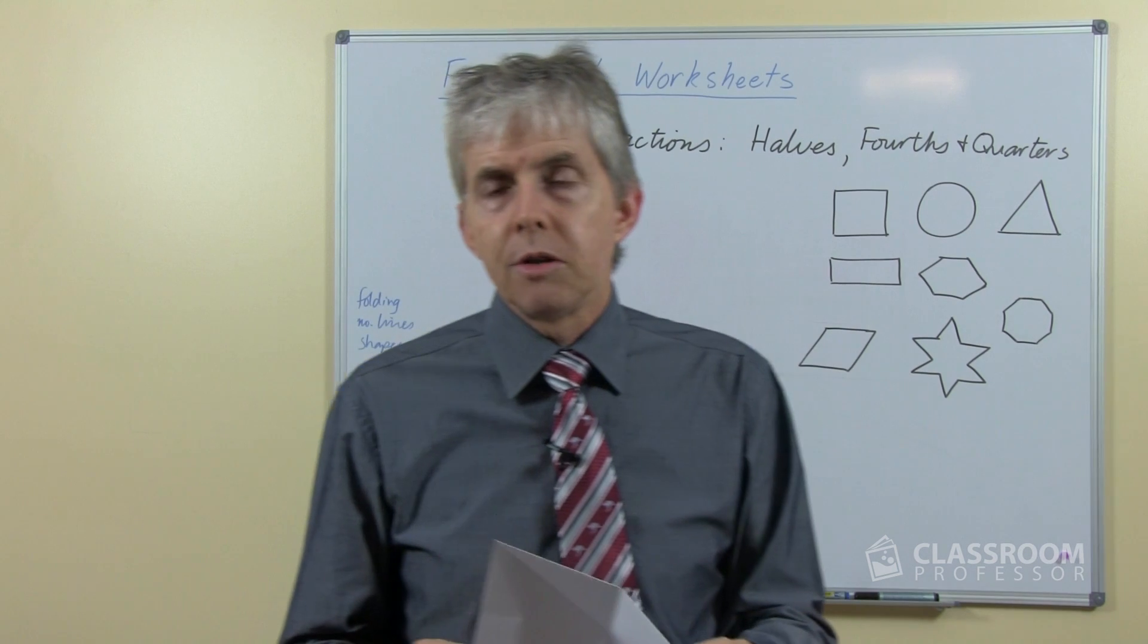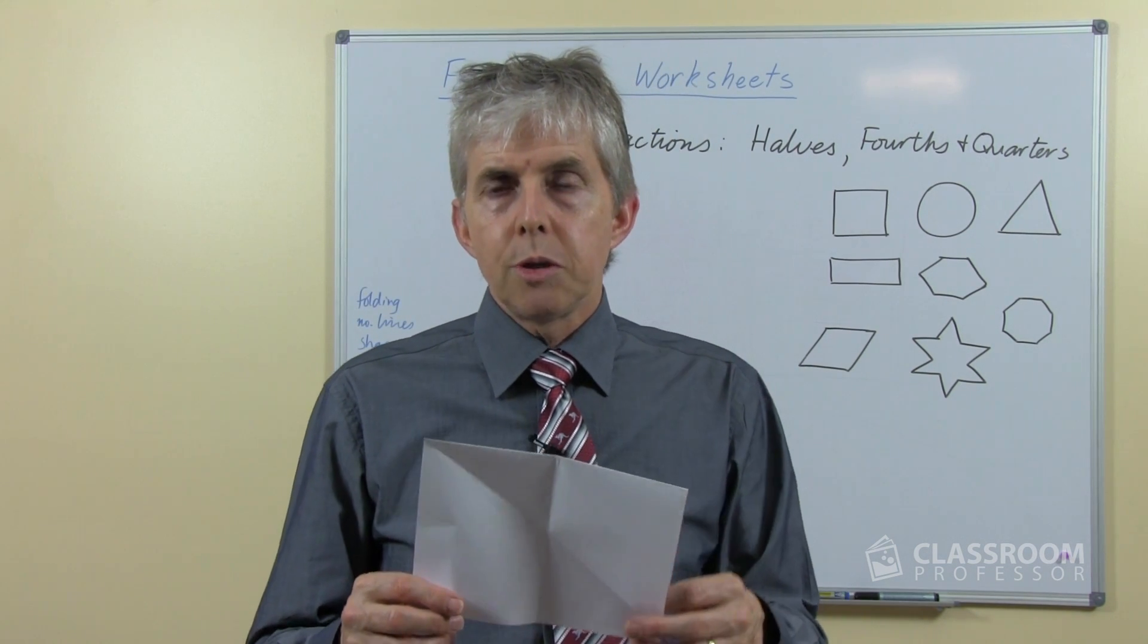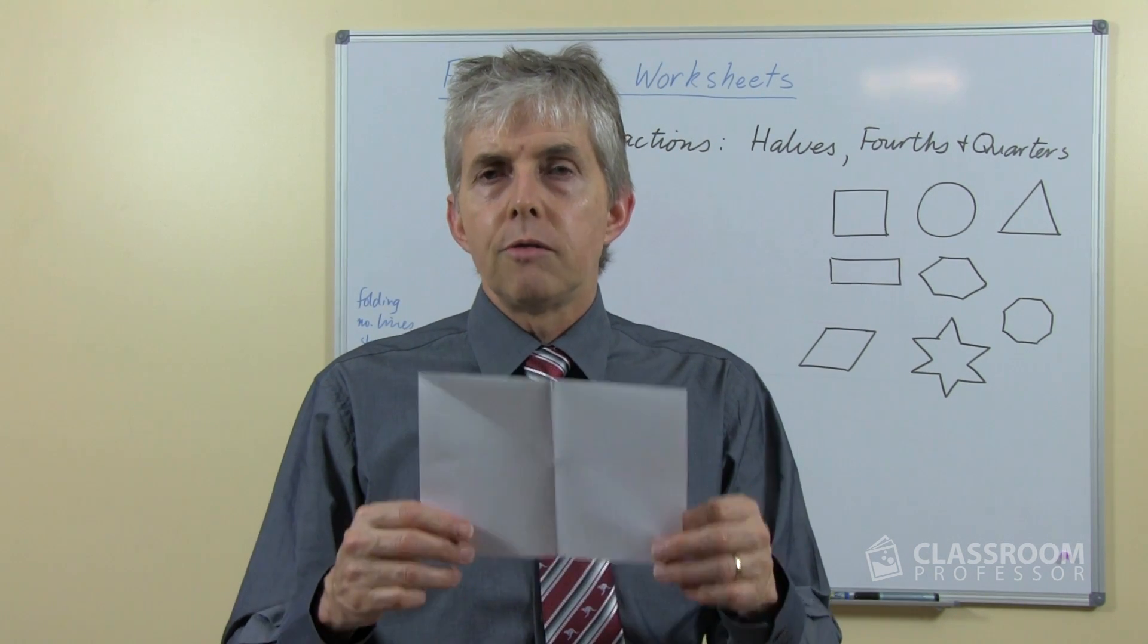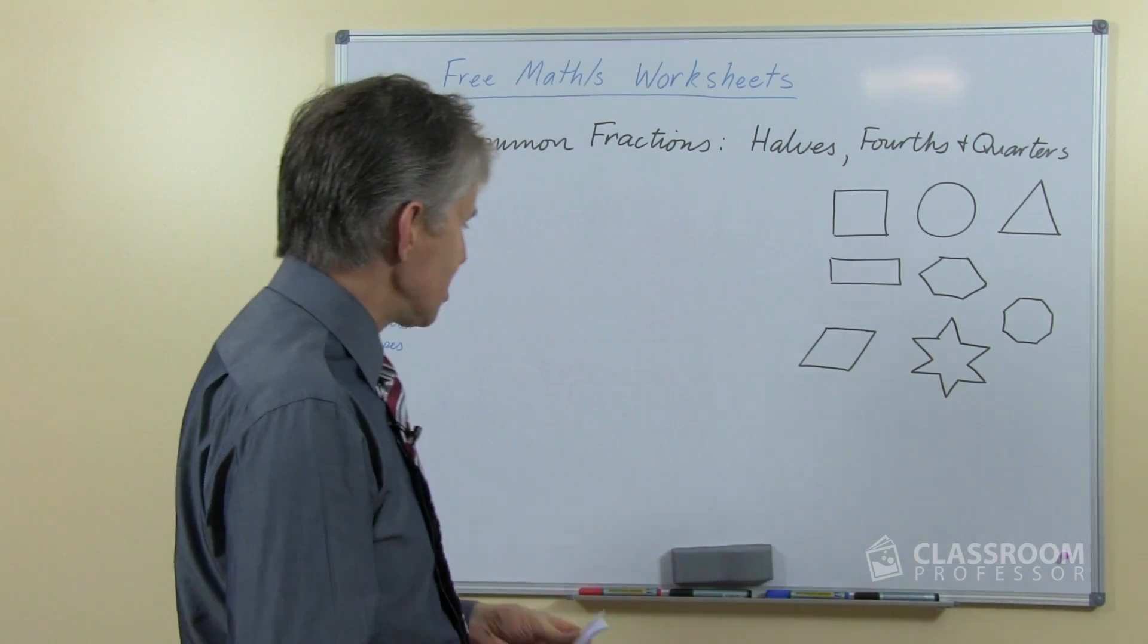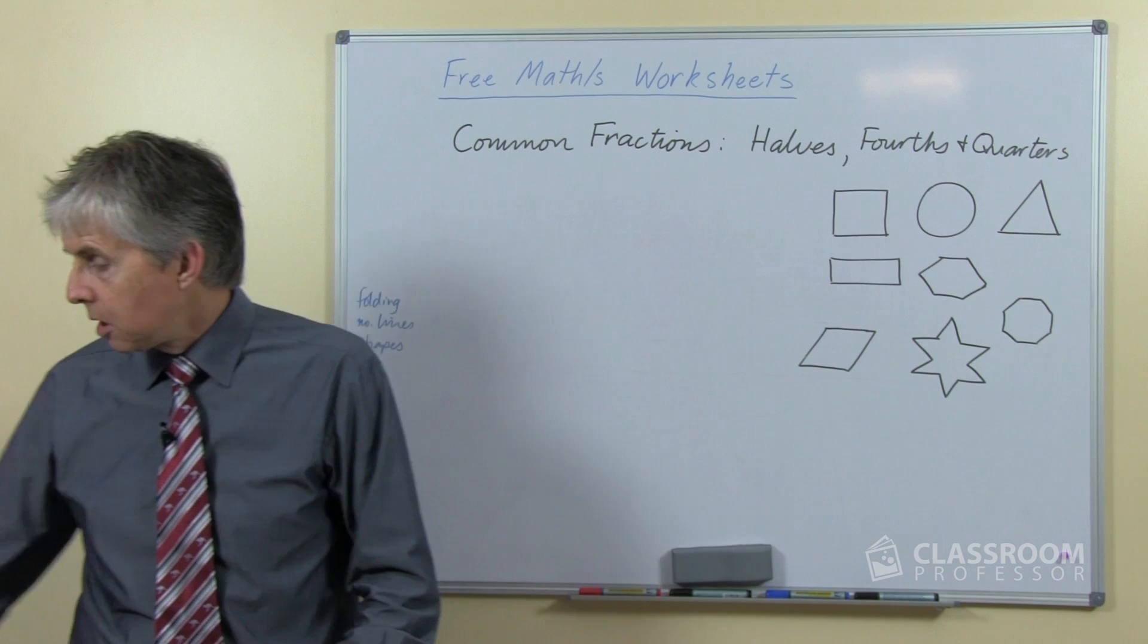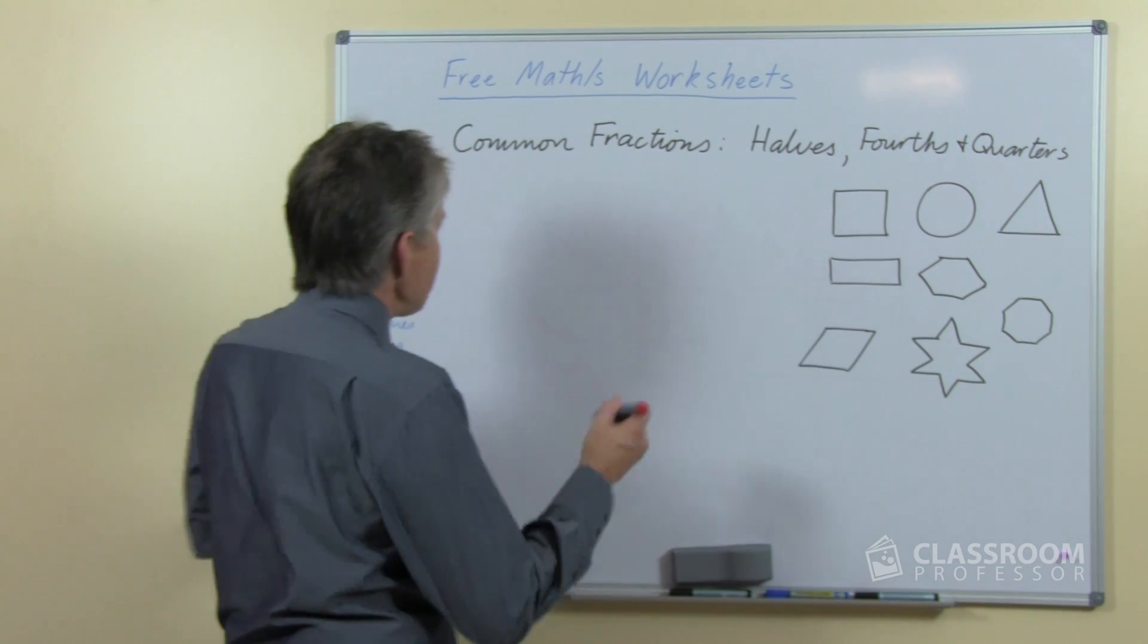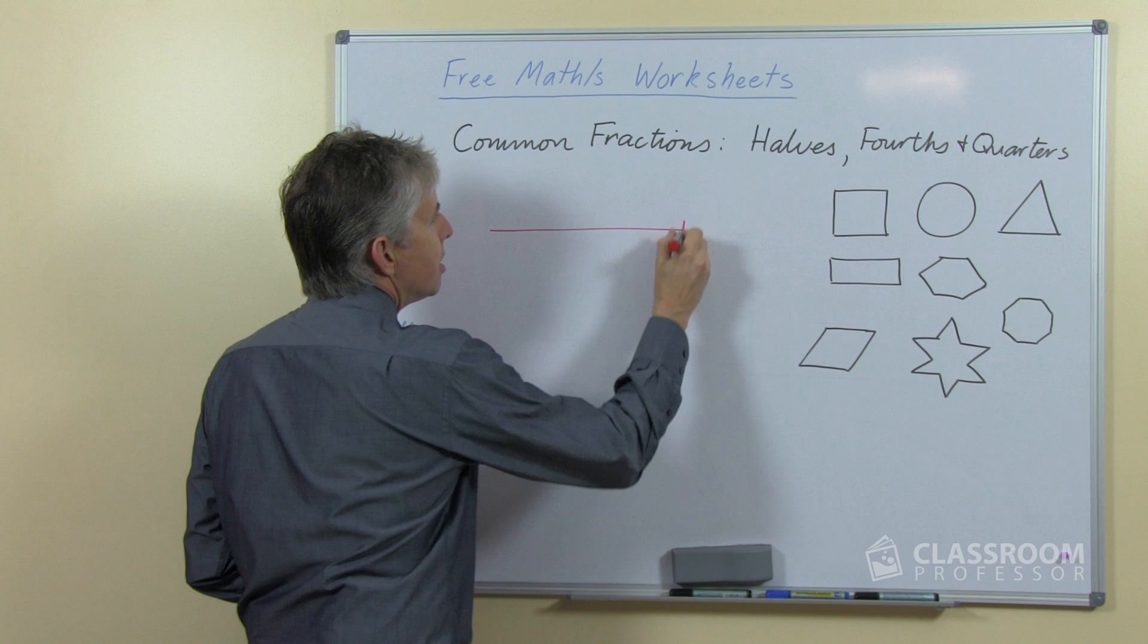And as I said last week, there are actually an infinite number of ways of folding or producing halves of a rectangle, so there must be an infinite number of ways of finding fourths or quarters as well. So paper folding is one method that we would recommend.